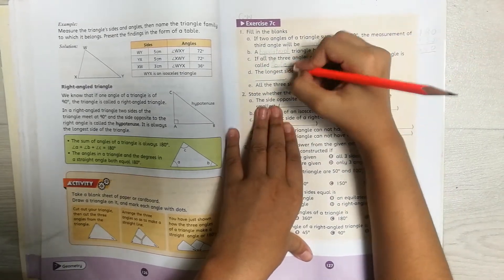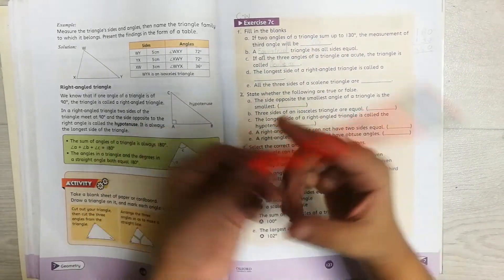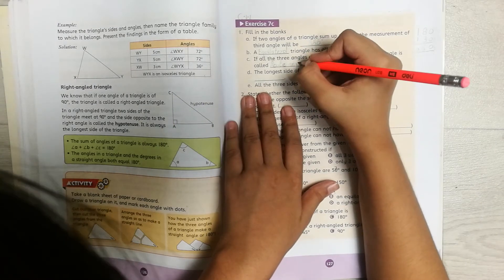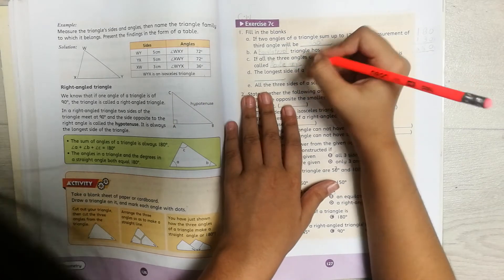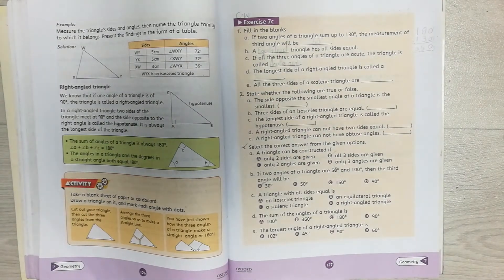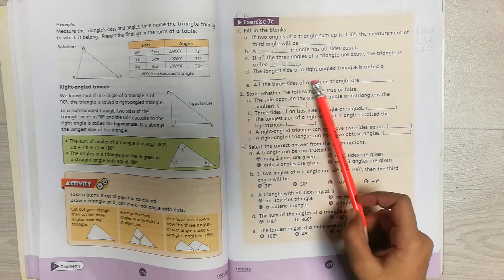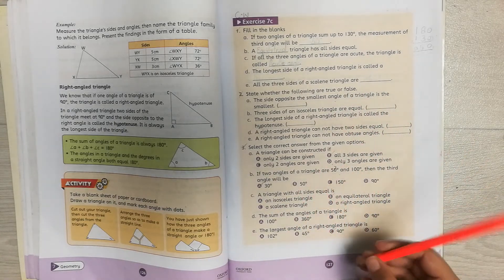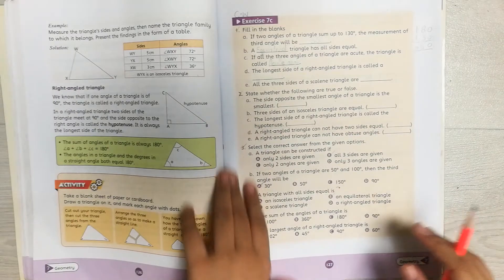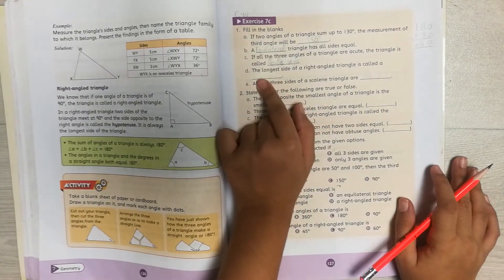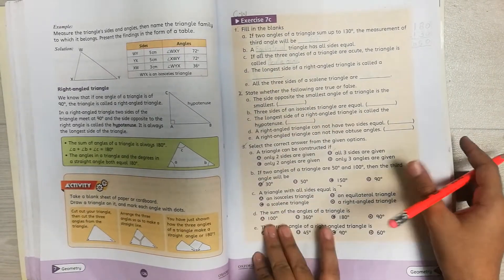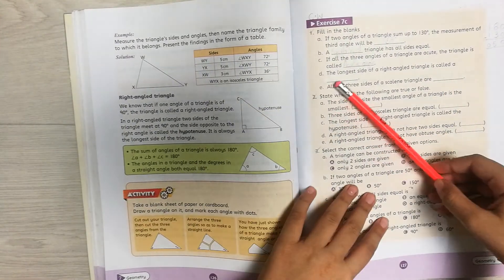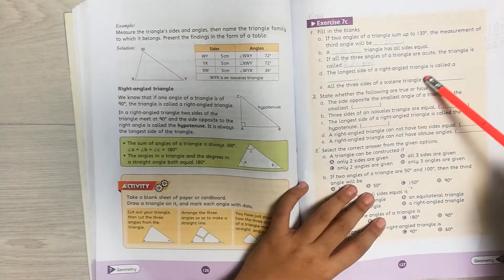Now let's go to part D. The longest side of a right angle triangle is called a blank. Hypotenuse. Let me tell you, let's go to this page. The longest side of a right angle triangle is called hypotenuse.